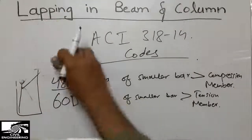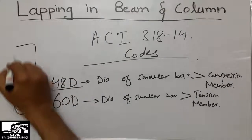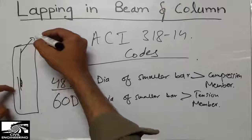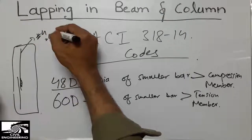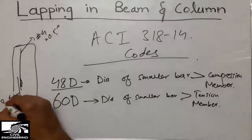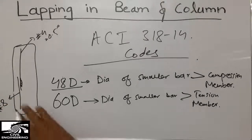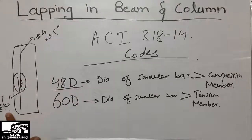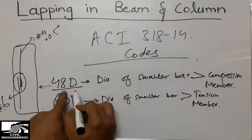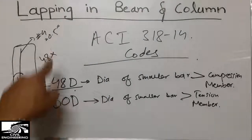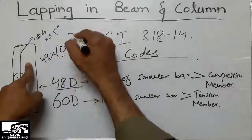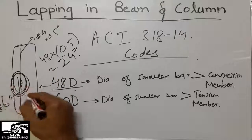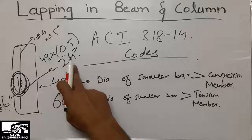For example, consider a column where one bar is a Number 4 bar (0.5 inches diameter) and the other is a Number 6 or Number 8 bar. Since this is a compression member (column), we use the formula 48 × d, where d is the diameter of the smaller bar. So 48 × 0.5 = 24 inches. This means the overlapping length in the column should not be less than 24 inches.